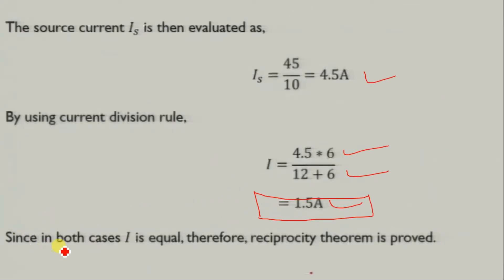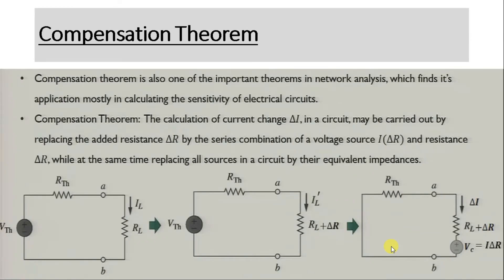In both cases our value of I is equal; therefore the reciprocity theorem is proved for this circuit. I hope you now understand when and how to use the reciprocity theorem. Now let us start the second theorem, that is the compensation theorem. This theorem is also one of the important theorems in network analysis, finding its application mostly in calculating the sensitivity of electrical circuits.